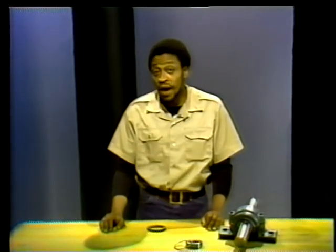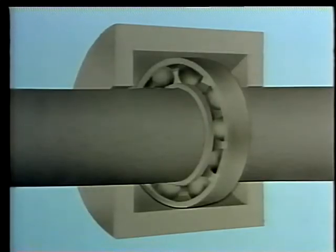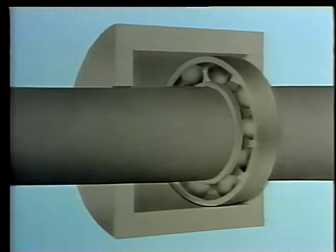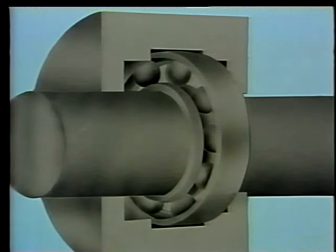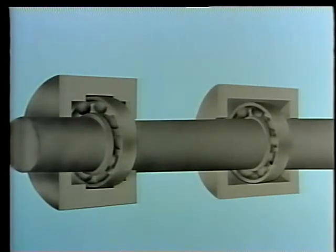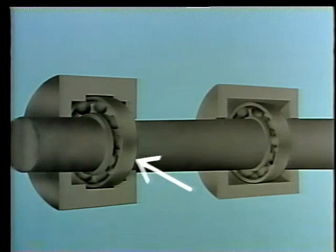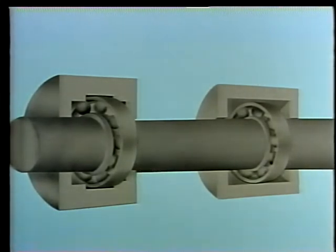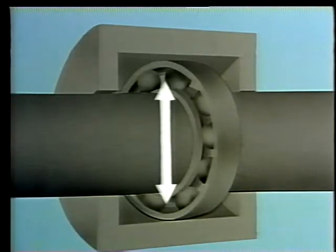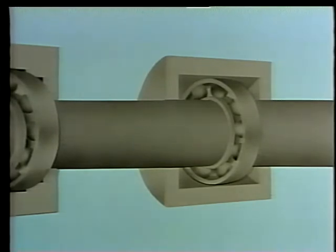Bearing housings can be built to either completely prevent axial movement or to allow a small amount. A housing that allows a small amount of axial movement is said to have a floating bearing. A housing that prevents all axial movement has a fixed bearing. Both types may be found in the same machine. Usually just one bearing on a shaft is fixed to prevent axial movement, and any others are floating bearings that support only radial load. The main reason for a floating bearing is to allow the shaft to expand when it gets hot, so shaft expansion does not place extra load on the bearings.